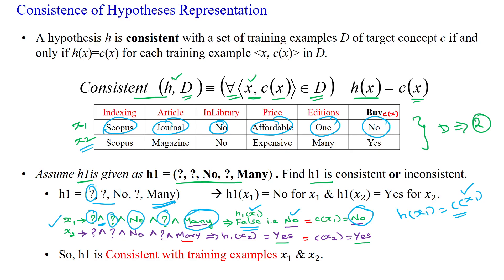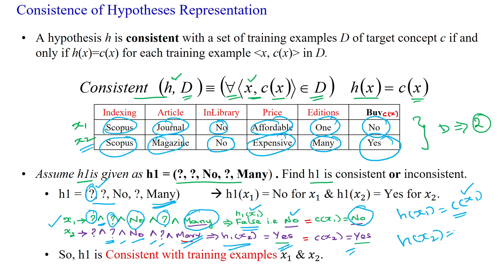Then we check X2. For X2, question symbol accepting any value, question symbol accepting any value, it is no, question symbol accepting any value, and many — it is many, it is also many. So H1 of X2 gives true, that is yes. C of X2 is also yes. So both are satisfying H of X2 equal to C of X2. The given hypothesis H1 is consistent with training examples X1 and X2.